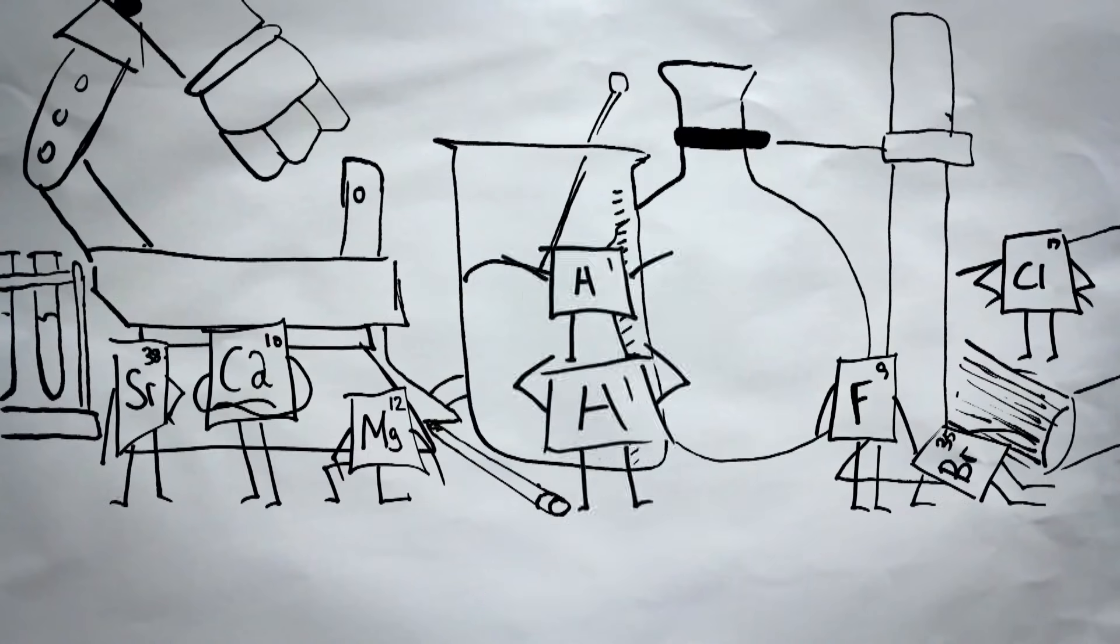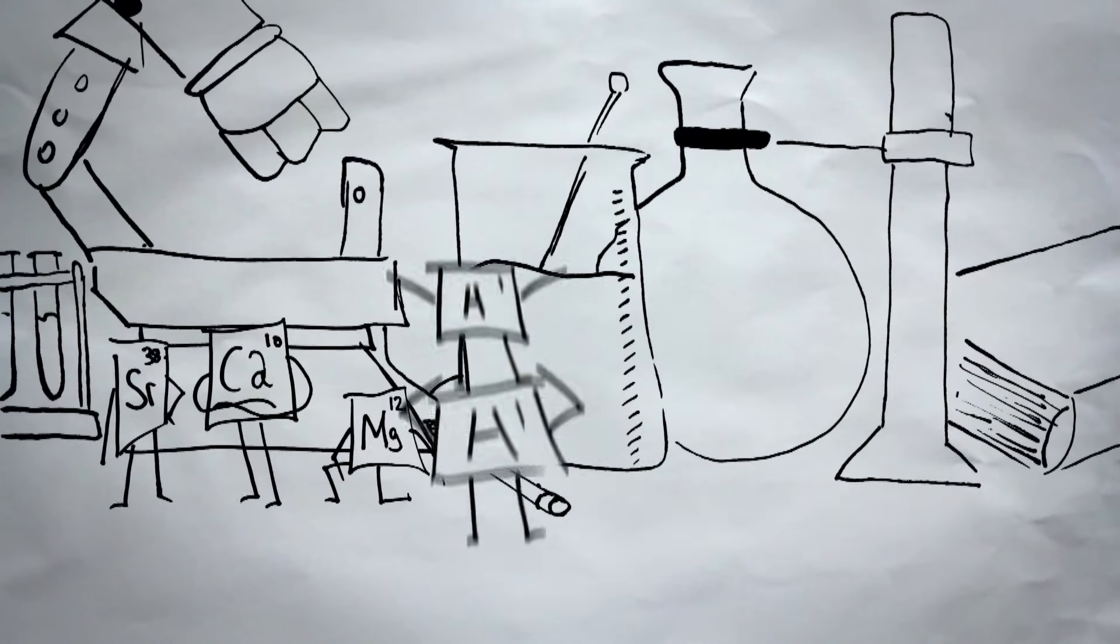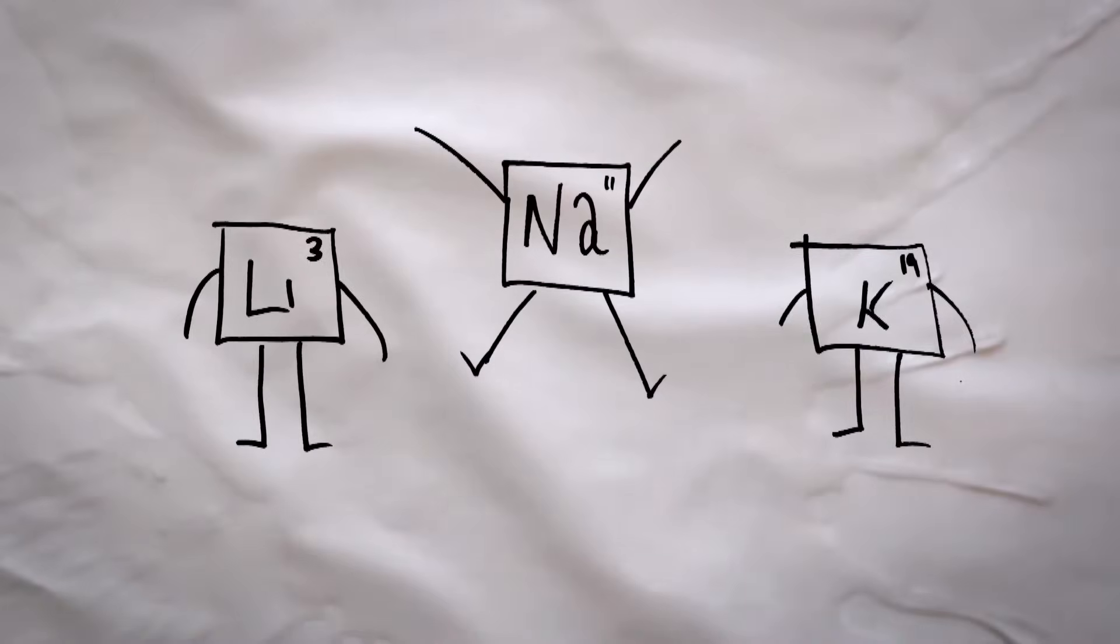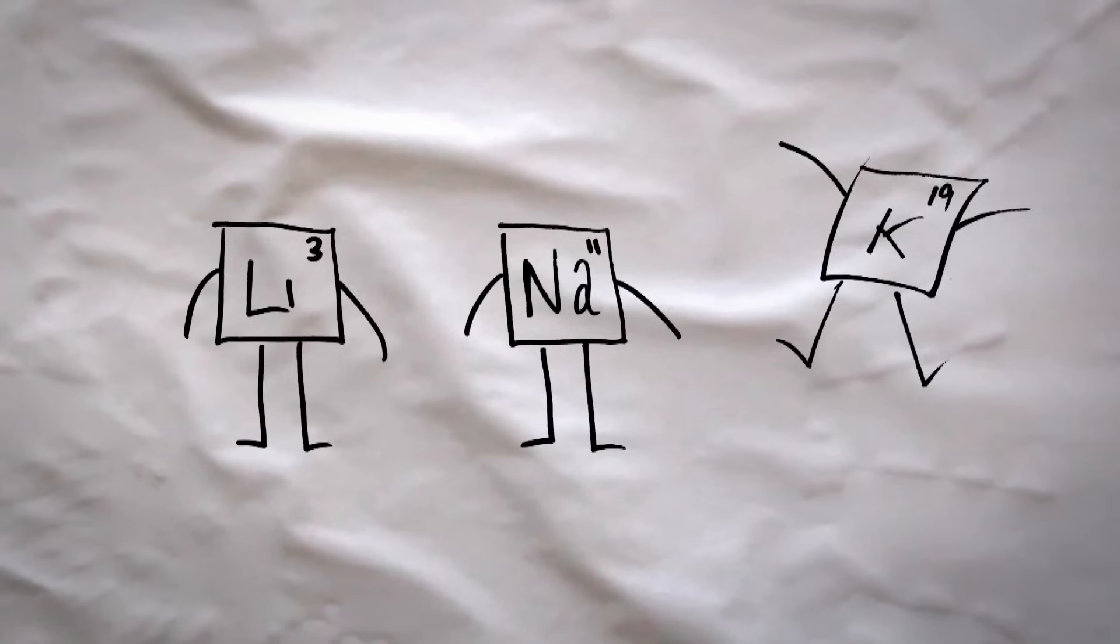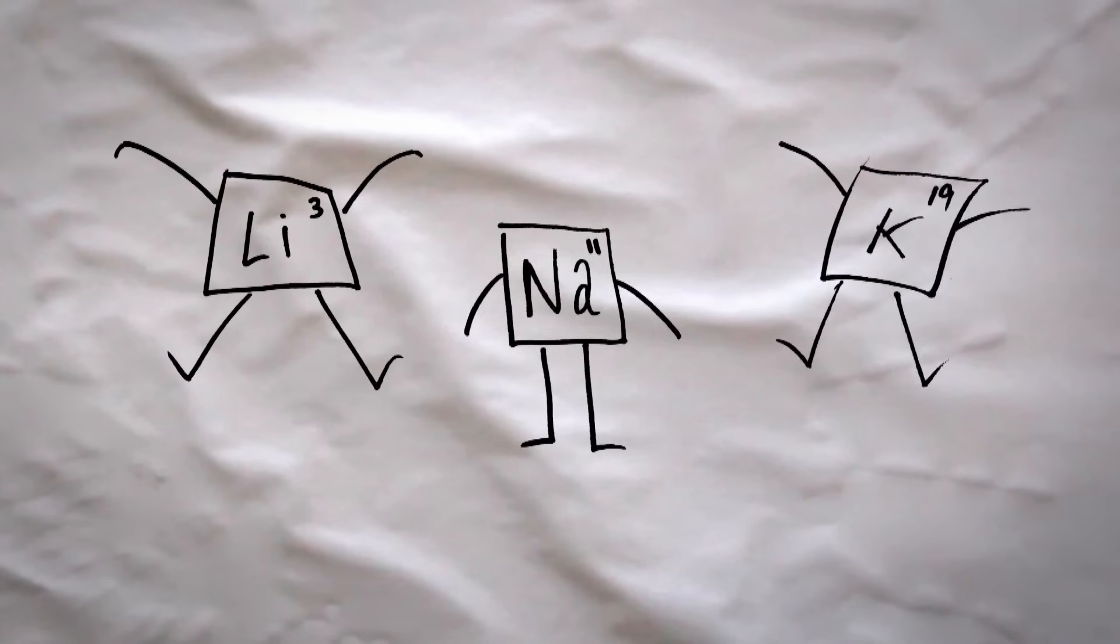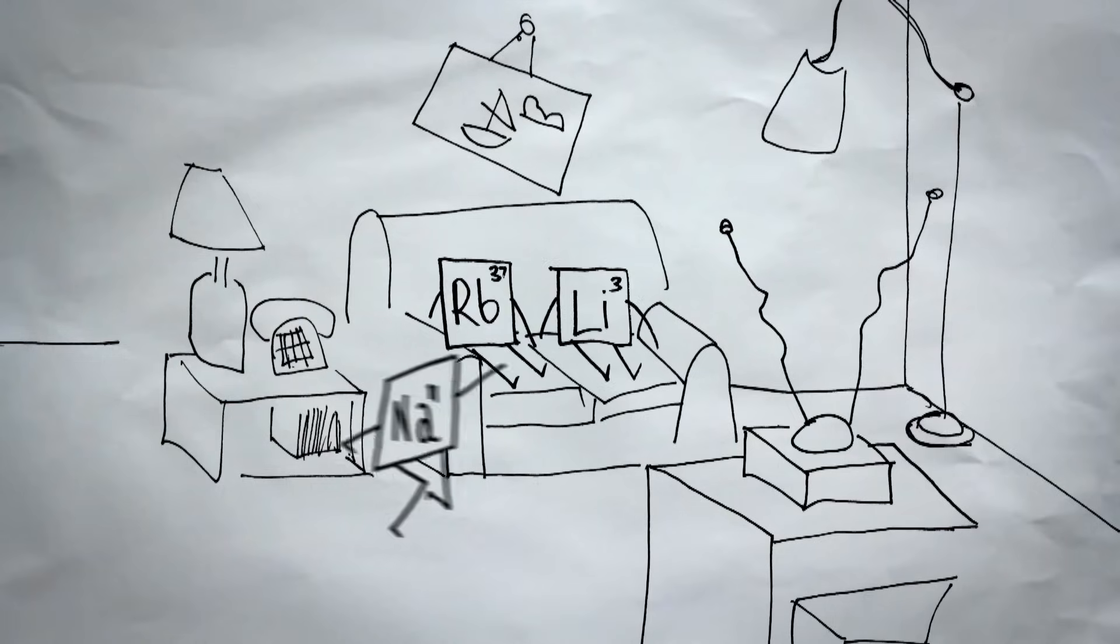What he found was that certain elements shared similar properties and reactions. For example, when pure lithium, sodium, and potassium are exposed to water, they will react violently and skid across the surface of the water with sparks. The scientists then realized that these similarities are no coincidence. Elements belong to families that share similar properties.